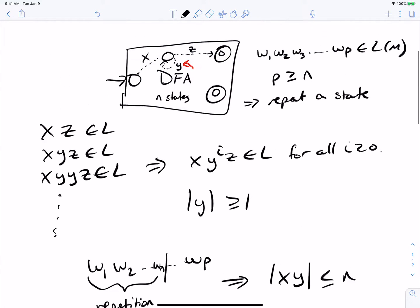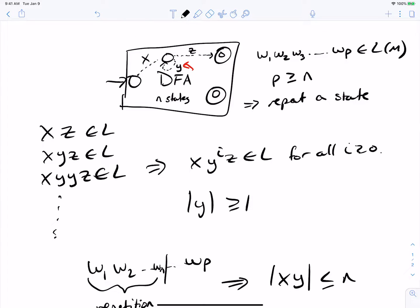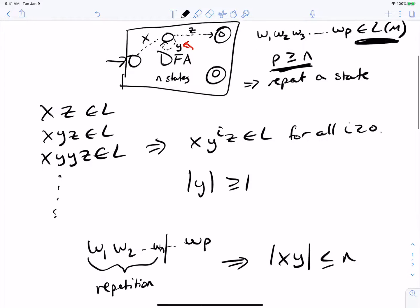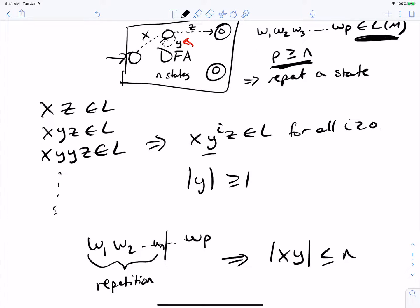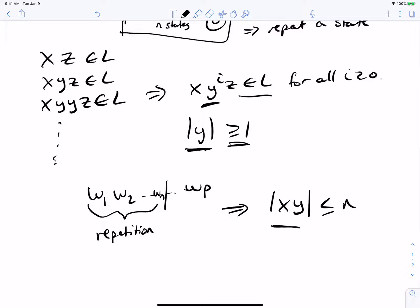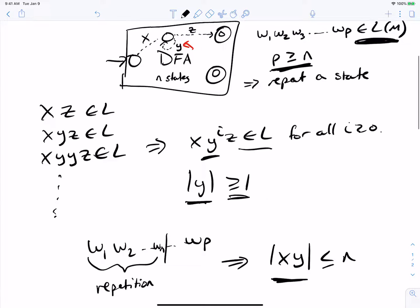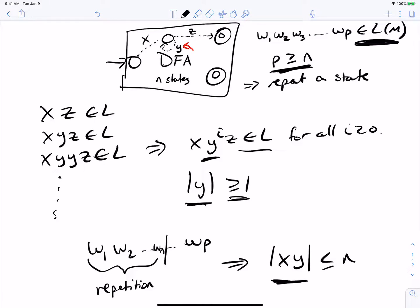So what this tells us is that there is some way to decompose the original string that was in the language and at least the number of states, such that if we repeat the middle piece as many times as we want, we stay in the language, as long as the middle piece has at least one character in it, and the first and second piece are at most the number of states in the DFA. And that actually proves the pumping lemma for regular languages.